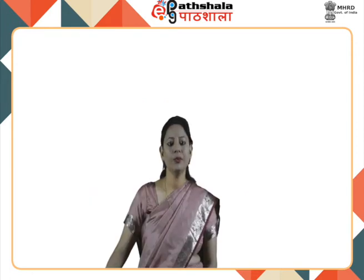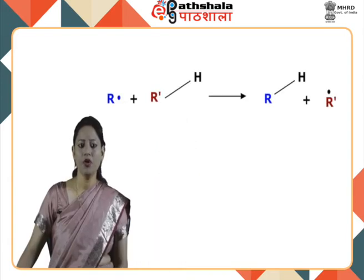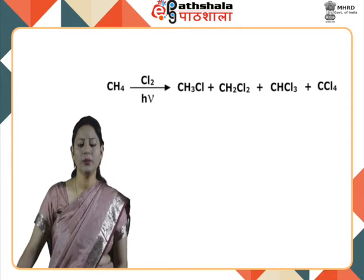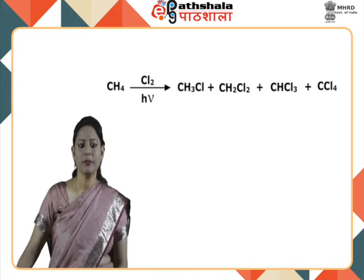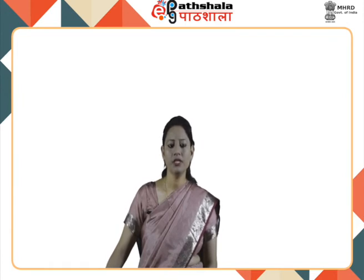Now we move to the reactions shown by free radicals or the reactions in which free radical formation occurs. A free radical may undergo the following types of reactions. First is the abstraction of another atom or group. For example, halogenation of alkanes proceeds via a free radical mechanism. The chlorination of methane is shown — methane when reacted with chlorine in the presence of light can form methyl chloride, dichloromethane, trichloromethane, and tetrachloromethane. This is a free radical reaction, and the mechanism involves formation of free radicals. This reaction involves three main steps: initiation, propagation, and chain termination.